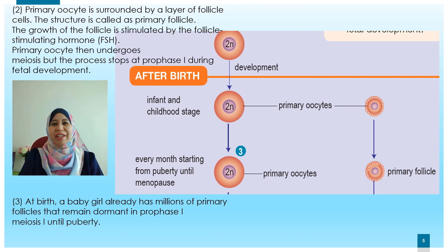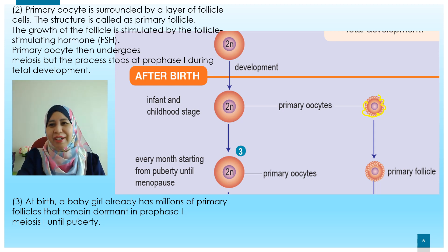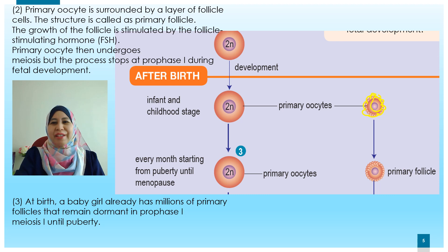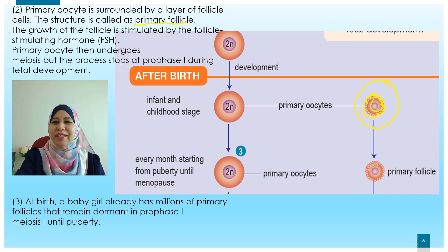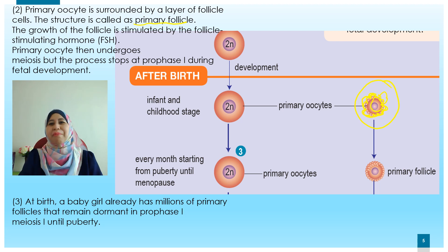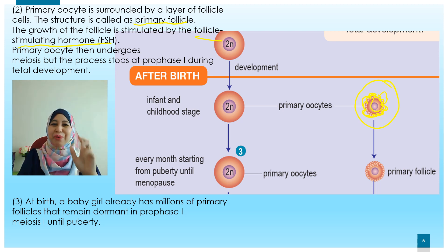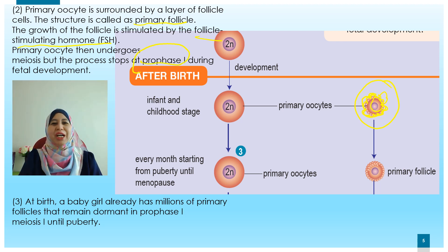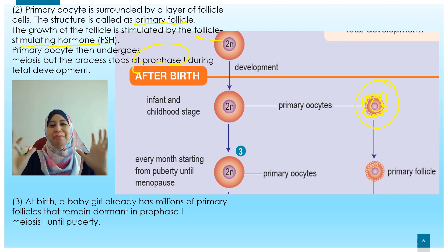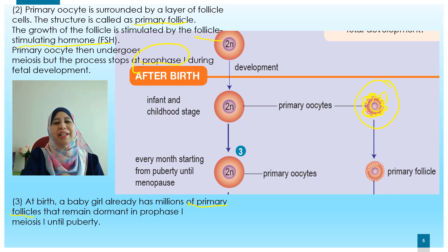The primary oocyte is then surrounded by a layer of follicle cells on the outside, with the primary oocyte on the inside. This whole structure is called the primary follicle. The growth of the follicle cells is stimulated by the follicle-stimulating hormone, or FSH. The primary oocyte then undergoes meiosis, but the process stops at prophase 1 during fetal development. When the baby girl is born, she already has millions of primary follicles that remain dormant.